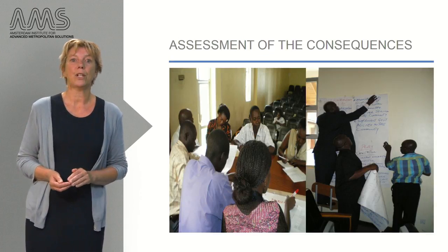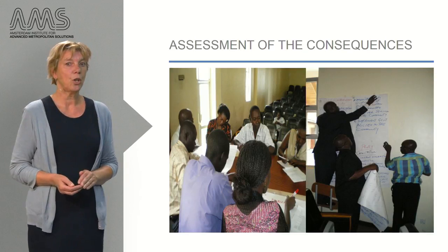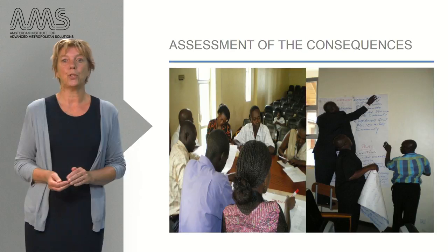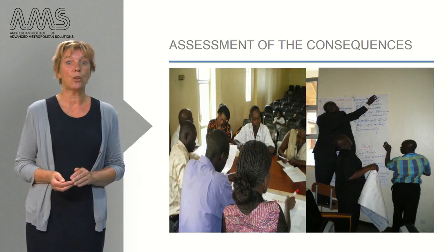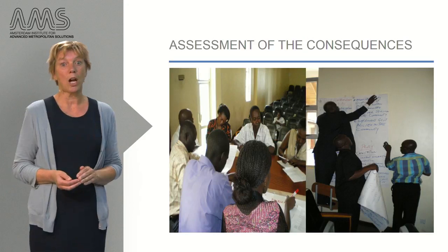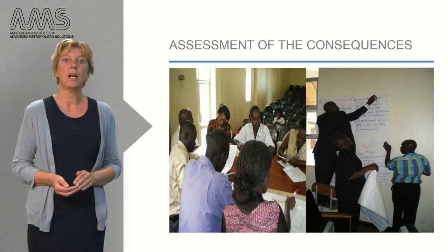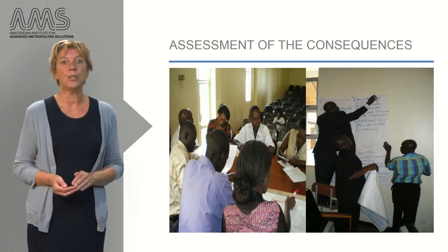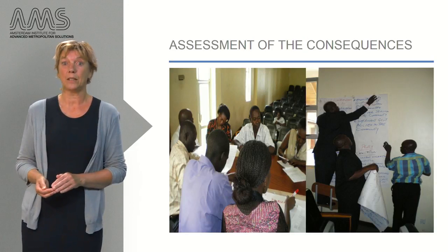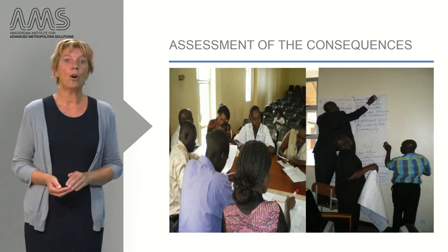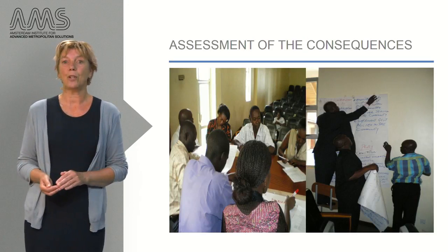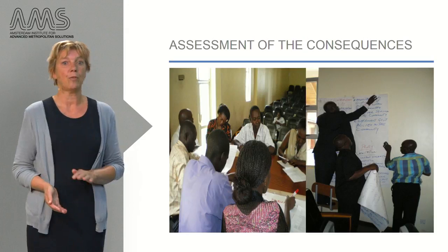All alternatives are screened by the potential users, who are assessing the consequences for each of them. First, the users discuss with each other the pros and cons of each alternative. Participants listen to each other's arguments and preferences. Afterwards, they screen individually on the criteria they set together in the phase of setting the objectives. The criteria often consist of indications for technical feasibility, cost effectiveness and social, health and environmental impact.